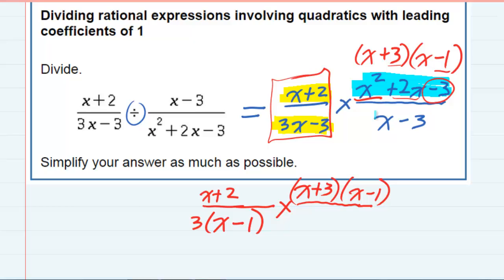This bottom down here, x minus 3, nothing I can do to factor that. No common factors to factor out, so I'm just going to write it down here.